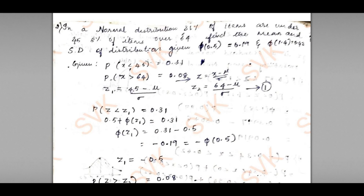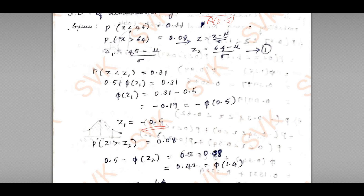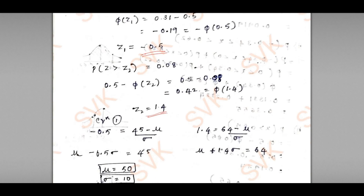Going with the next problem — using normal distribution, they provided values where φ(0.5) = 0.19 and φ(1.4) = 0.42. Finding z1 and z2: probability of Z < z1 gives −0.5, and probability of Z > z2 gives z2 = 1.4. Using these two I find mean and standard deviation. I got mean as 50 and standard deviation as 10.